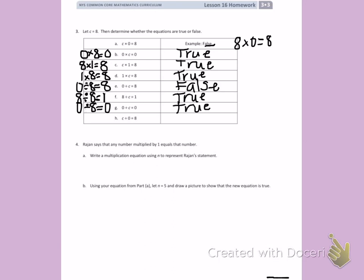Letter H, C divided by 0 equals 8. 8 divided by 0 equals 8. This is false, because when we are dividing, 0 always has to come first. This is false.